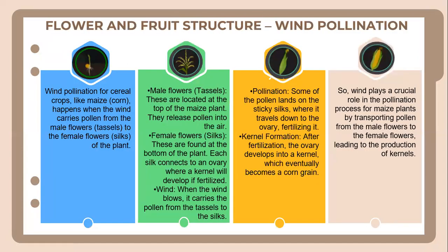Let's look into the flower and fruit structure. This is wheat pollination. For cereal crops like maize and corn, pollination happens when the wind carries pollen from the male flowers to the female flowers of the plant. The male flowers, referred to as tassels, are located at the top of the maize plant and release pollen into the air. Meanwhile, female flowers are found at the bottom of the plant, and each silk connects to an ovary where a kernel will develop. When the wind blows, it carries the pollen from the tassels to the silk.